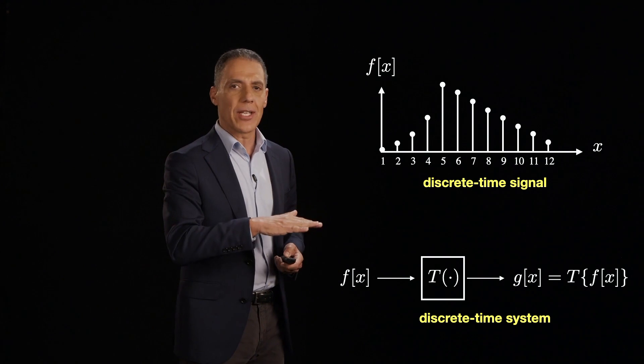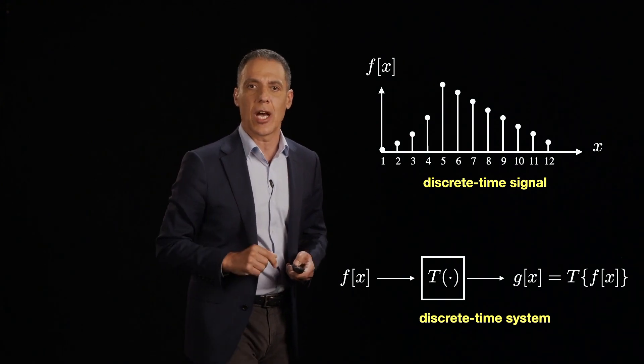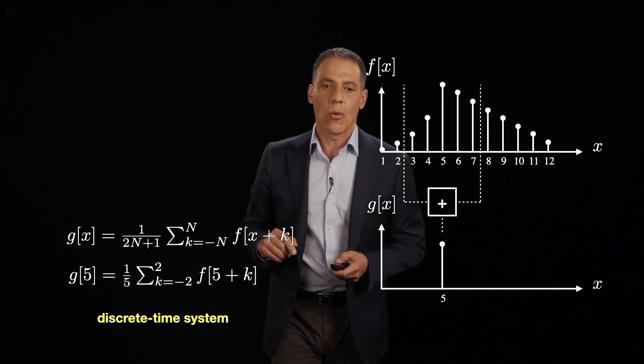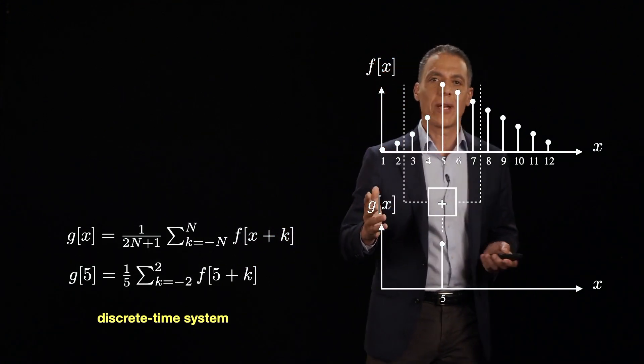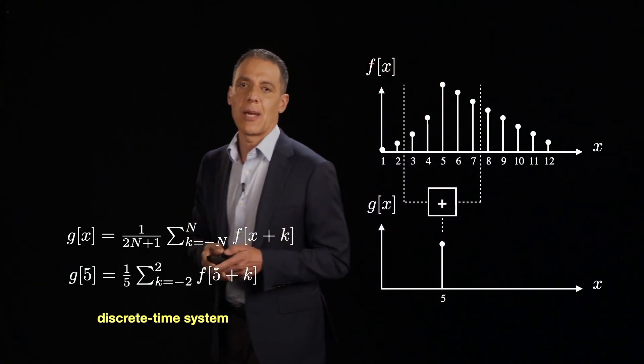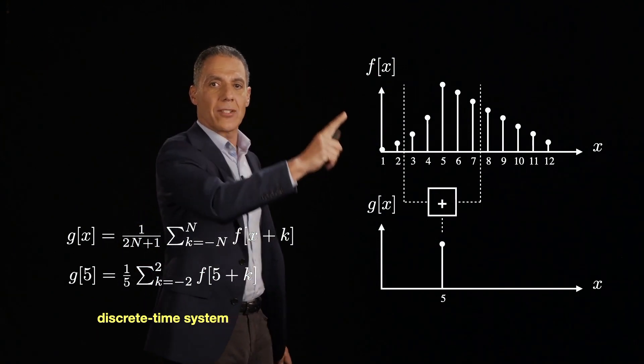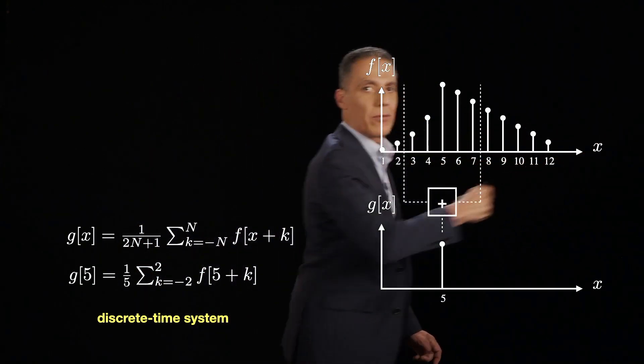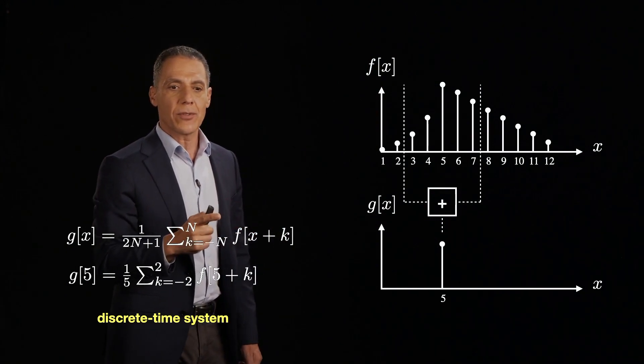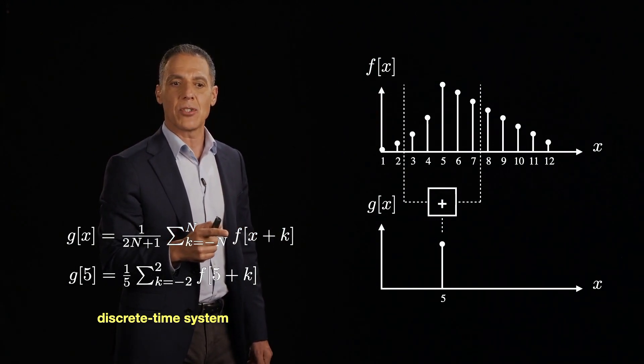Now, I haven't talked about the delta function yet, but here it's going to come in a little bit. Okay. So what we're going to do now, let's just talk about a very simple example of a discrete time system just to get you some intuition. So here's my discrete time signal again, f of x. Here's my signal. I'm going from left to right. And here's a very simple discrete time system.